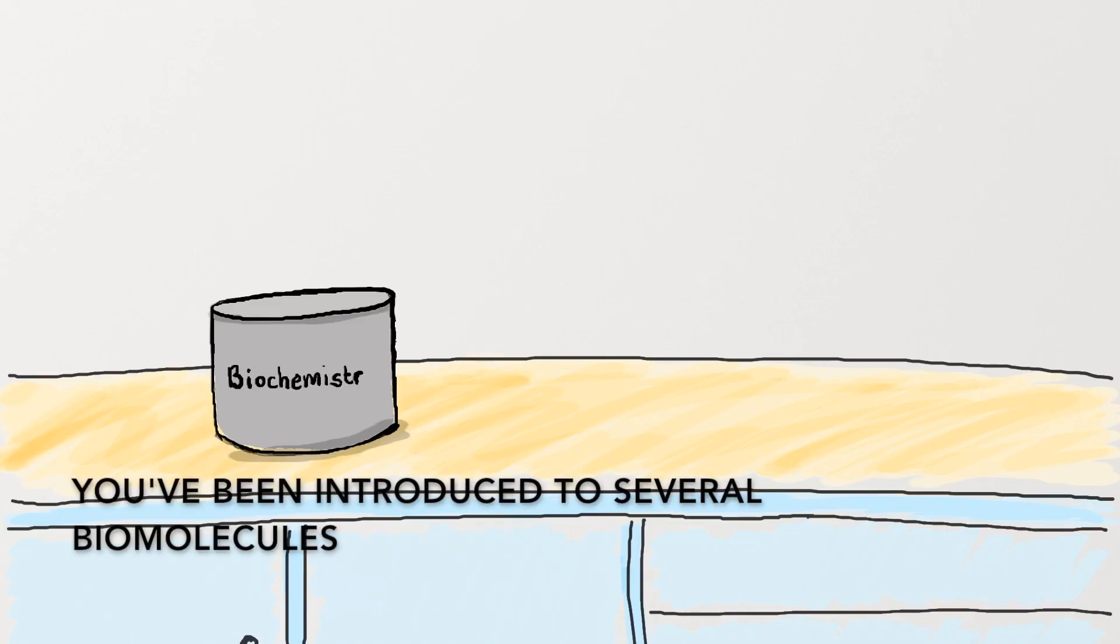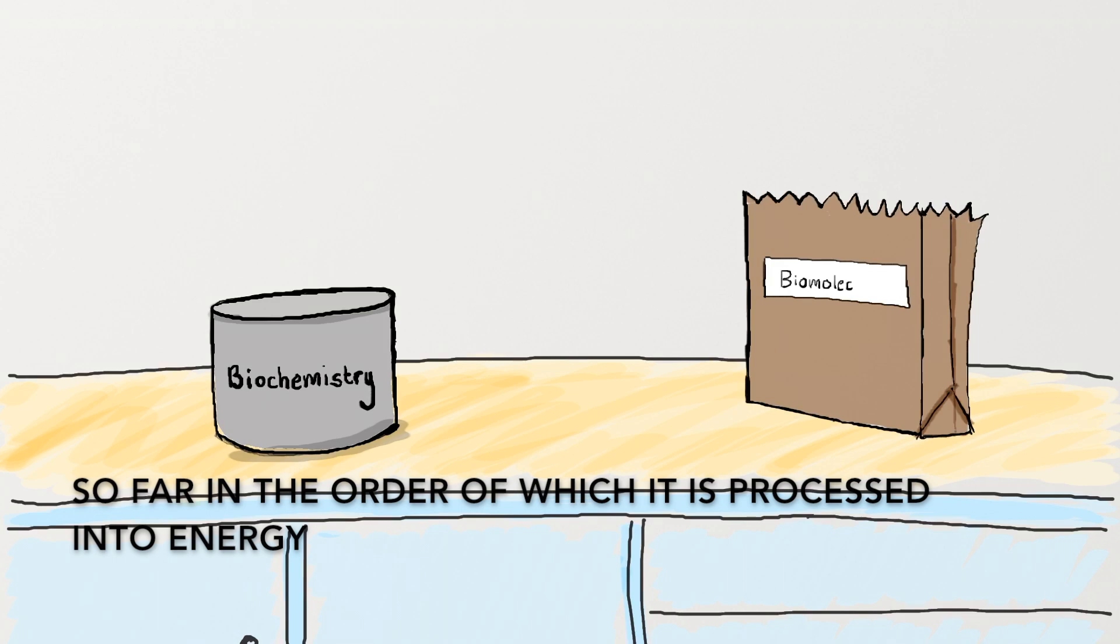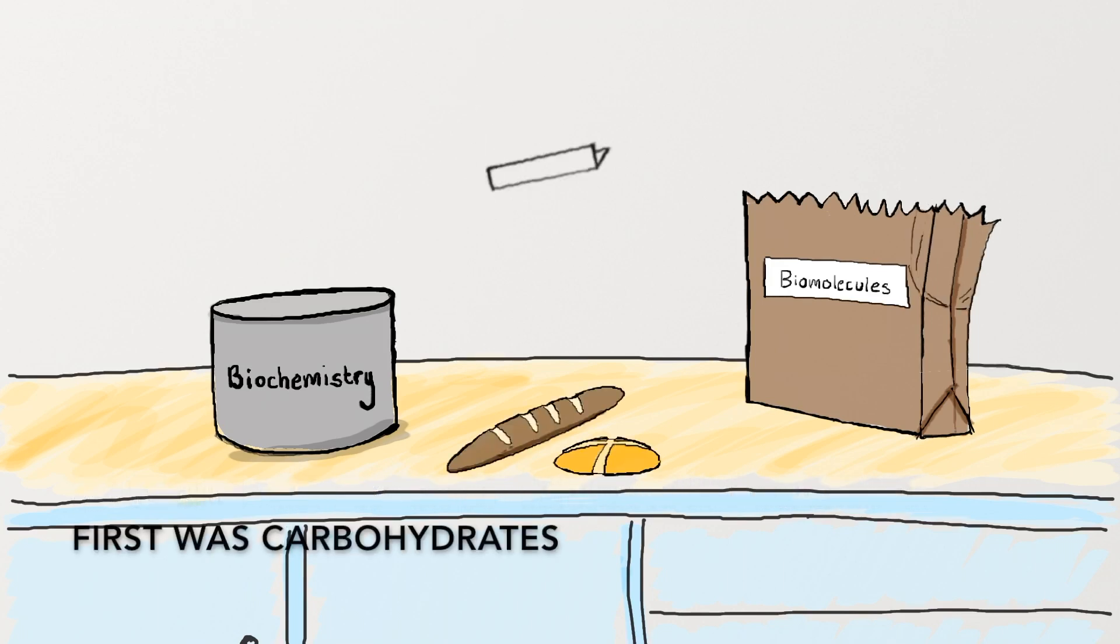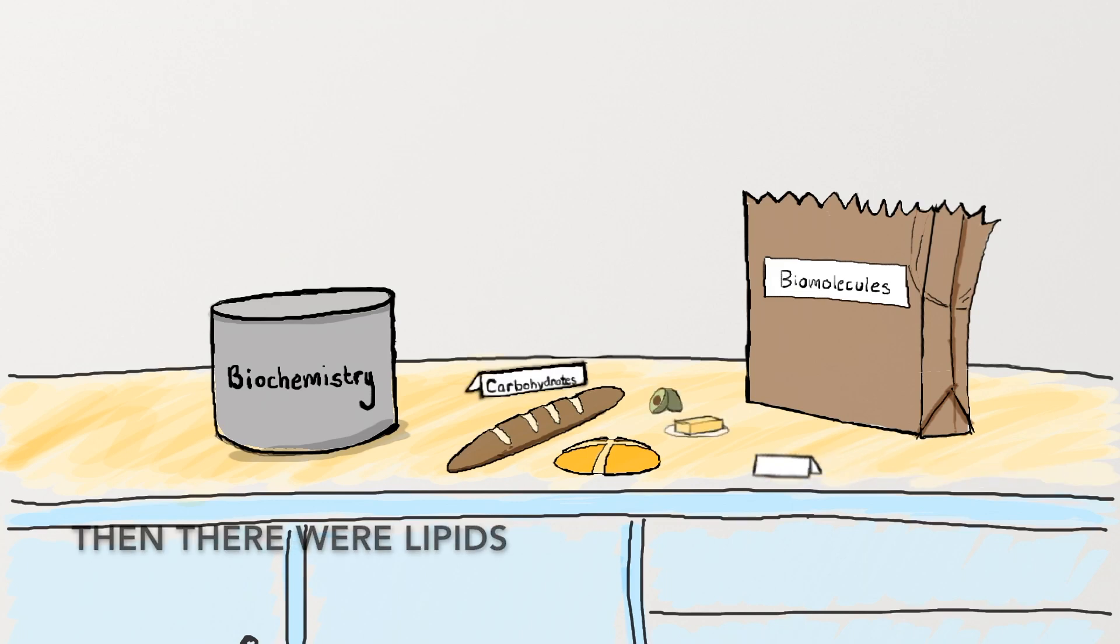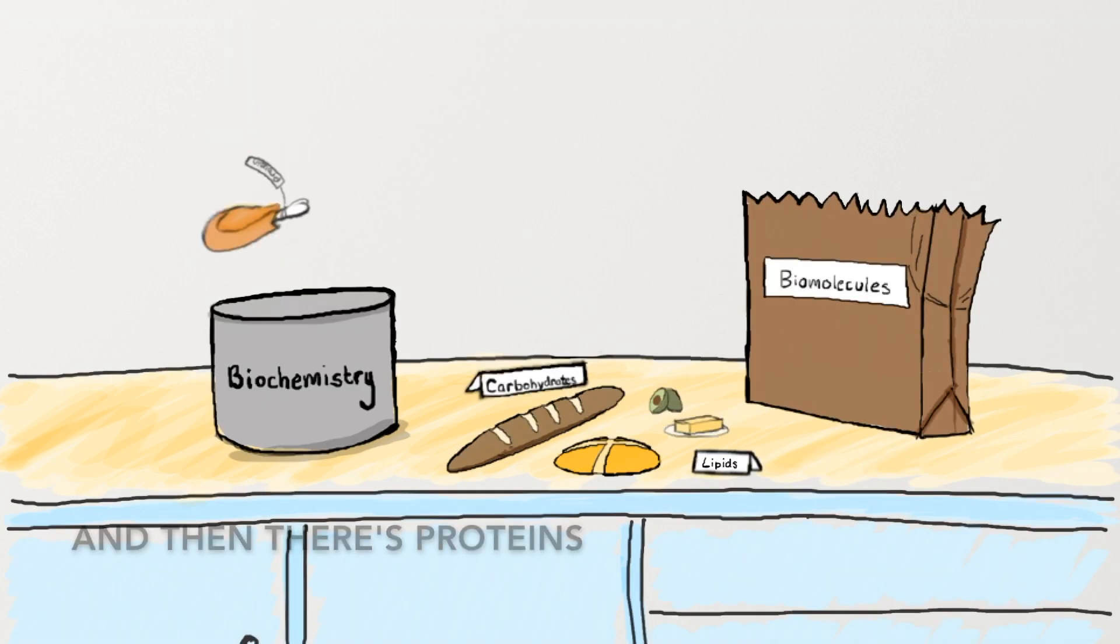In intro to biochemistry, you've been introduced to several biomolecules so far in the order of which it is processed into energy. First was carbohydrates, then there were lipids, and then there's proteins.